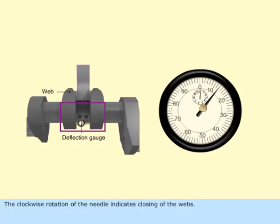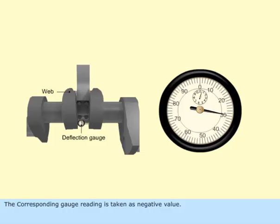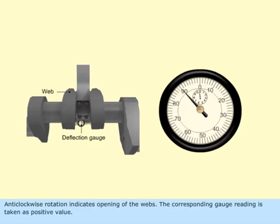The clockwise rotation of the needle indicates closing of the webs. The corresponding gauge reading is taken as negative value. Anti-clockwise rotation indicates opening of the webs. The corresponding gauge reading is taken as positive value.